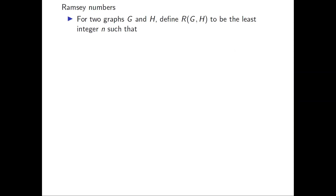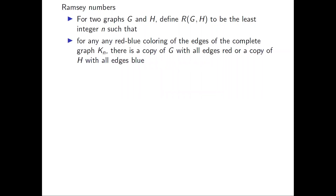Given two graphs G and H, we'll define R(G, H), the Ramsey number of G and H, to be the least integer N with the following property. For any red-blue coloring of the edges of the complete graph K_N, there is a copy of G with all of the edges red in that copy, or a copy of H with all of the edges blue in that copy.